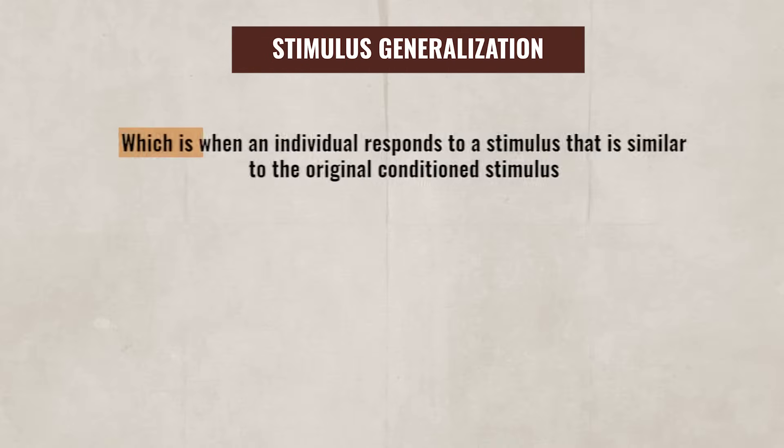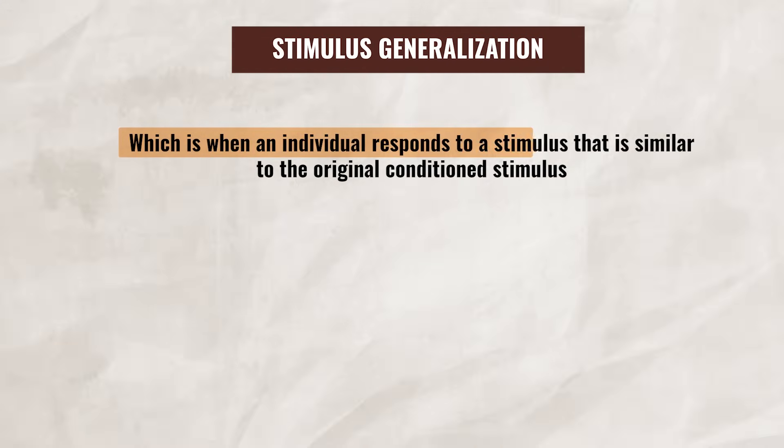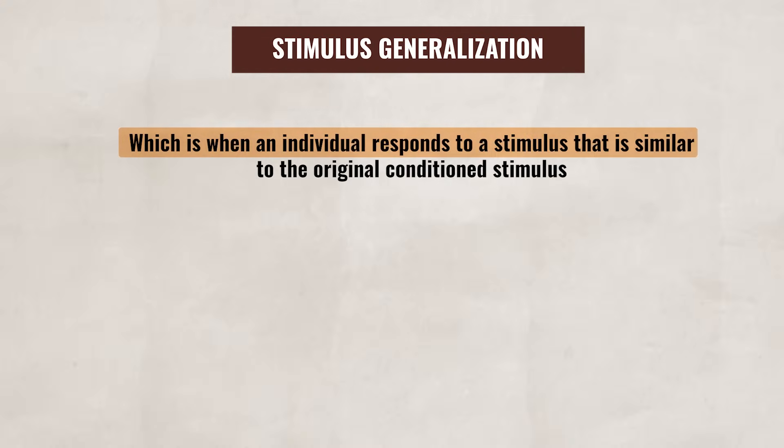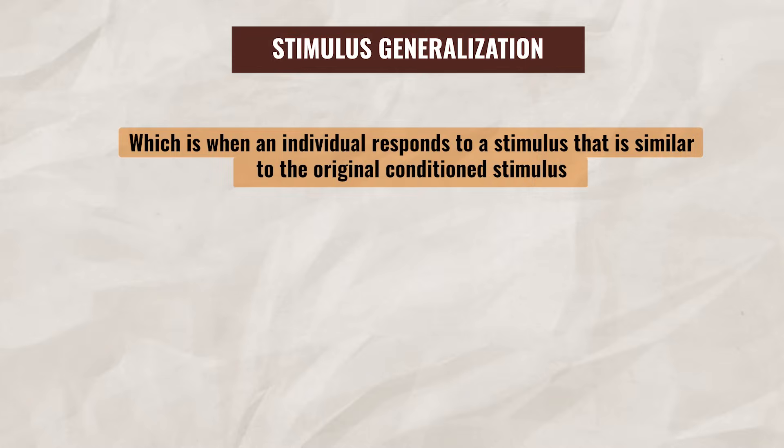Pavlov also wanted to see if, after conditioning occurred, the dog would respond to other stimuli that were similar to the original bell. What Pavlov discovered is that certain tones that were similar to the bell would cause the dog to salivate as well. This is known as stimulus generalization, which is when an individual responds to a stimulus that is similar to the original conditioned stimulus.